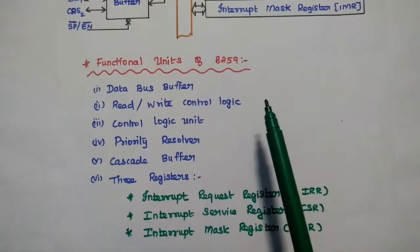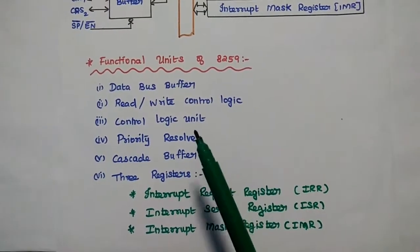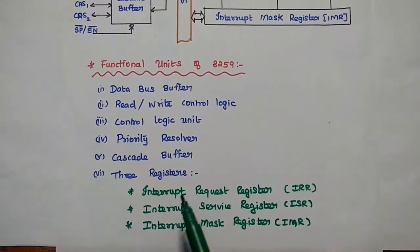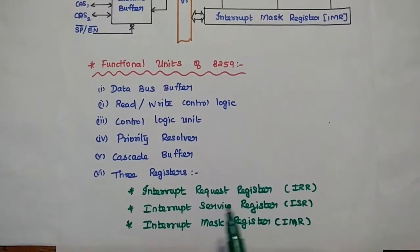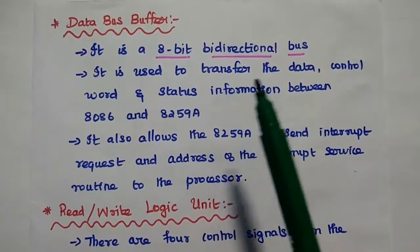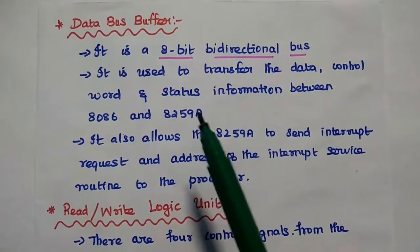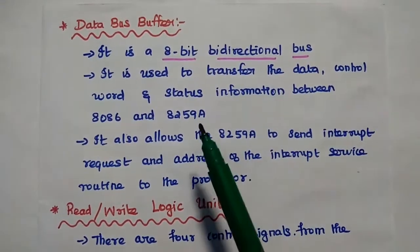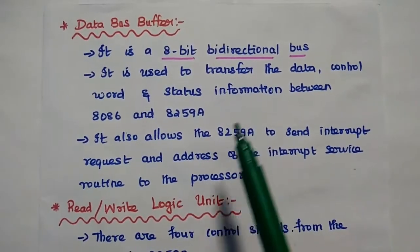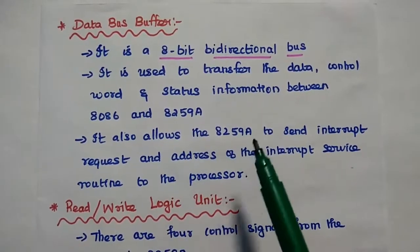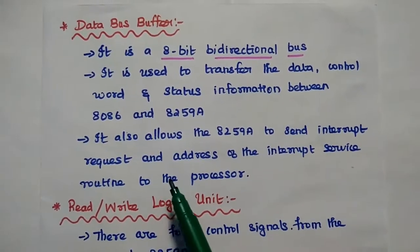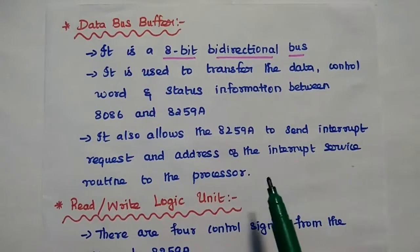To summarize the functional units of 8259: data bus buffer is an 8-bit bidirectional bus used to transfer data, control word, and status information between the processor and the interrupt controller. It also allows the interrupt controller to send the interrupt request and the address of the interrupt service routine to the processor.